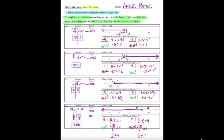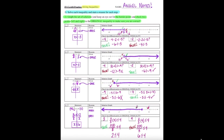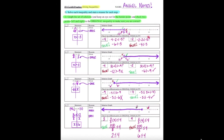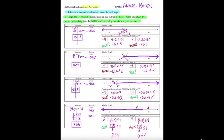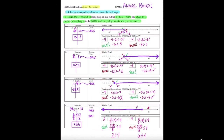We solve inequalities the same way we would solve an equation. The only difference is that once you solve it, you need to graph the set of solutions and check two different points in the original inequality — one should always be true and one should always be false. If that's not the case, you made a mistake — go back and fix your work.